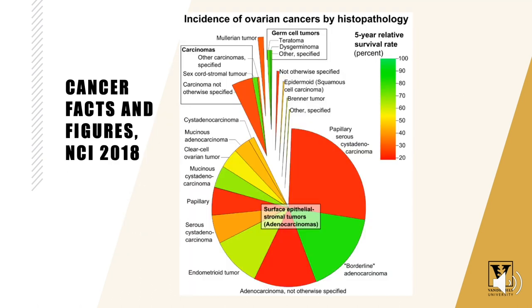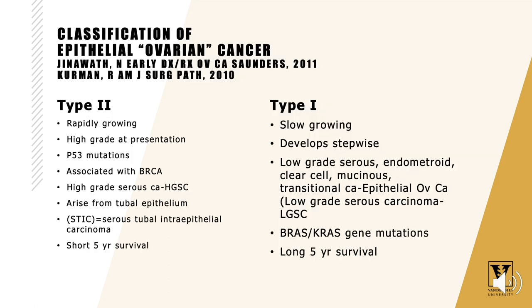If one looks at ovarian cancer, it is a variety of histologies, the most lethal of which is the epithelial adenocarcinomas, namely the serous cystadenocarcinomas that have very poor five-year survival. Recent work has described a difference between type 1 ovarian cancer, which is slow-growing, developed from the epithelial layer, is low-grade serous, endometrioid, clear cell, mucinous, and has associated KRAS and BRAF gene mutations — these are associated with a long five-year survival.